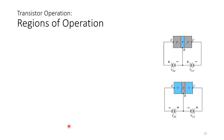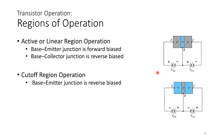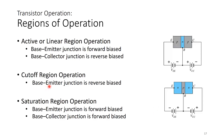Regions of operation: the active or linear region is where the base-emitter junction is forward biased and the base-collector junction is reverse biased — this is used for amplification. In the cutoff region, both junctions are reverse biased. In the saturation region, both the base-emitter and base-collector junctions are forward biased. When a BJT is placed in a circuit it will be biased into active, cutoff, or saturation region depending on the circuit.